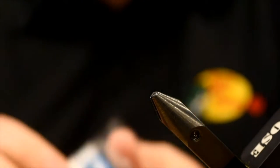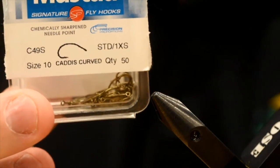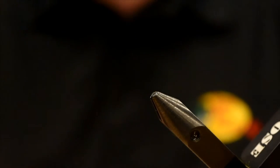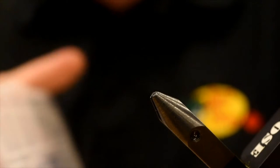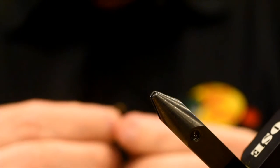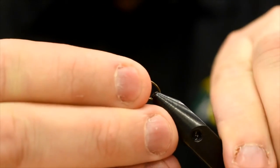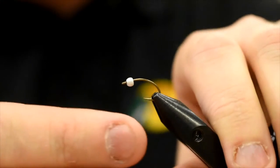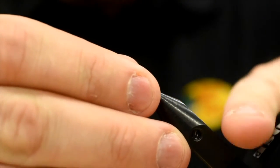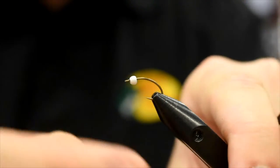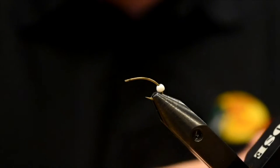So again, Mustad C49S, size 10. You can do these eights all the way through 22s, whatever size you want to tie. I've got a 7/64th white bead that I'm throwing on top of this one. Again, play around with the bead colors, you never know. Never know what's going to work. So I was tying these up at the show and selling them for blowout prices, and I couldn't tie them fast enough. You guys were just gobbling them up.